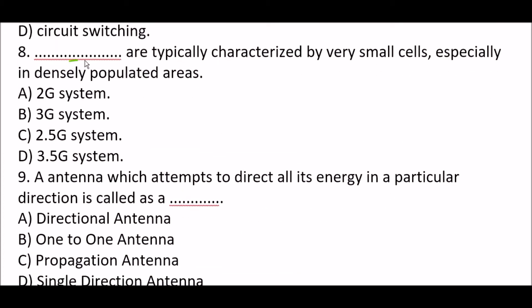Next question: Blank are typically characterized by very small cells, especially in intensely populated areas. Option A: 2G system. Option B: 3G system. Option C: 2.5G system. Option D: 3.5G system. The right answer is Option C, 2.5G system. 2.5G systems are typically characterized by very small cells, especially in densely populated areas.